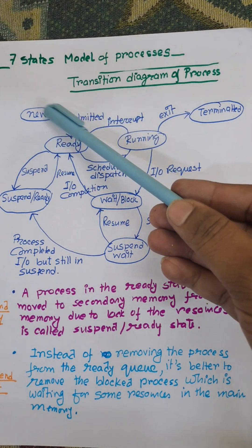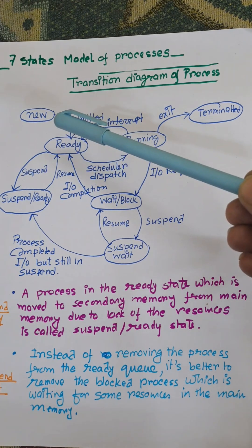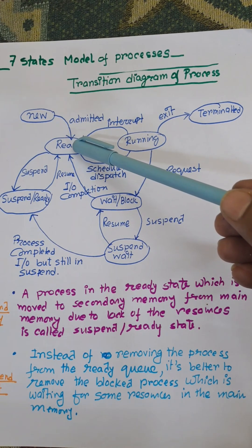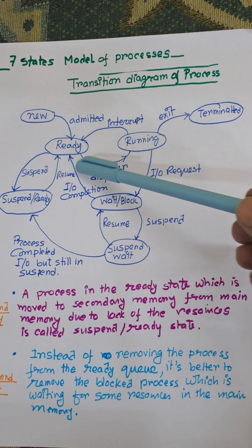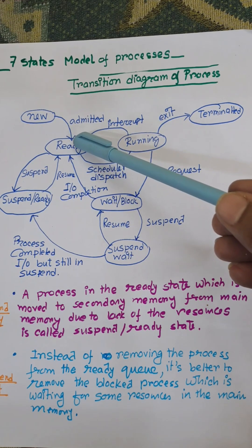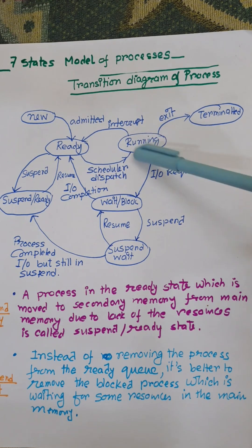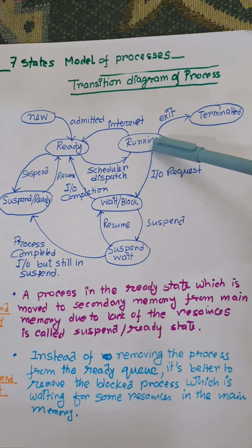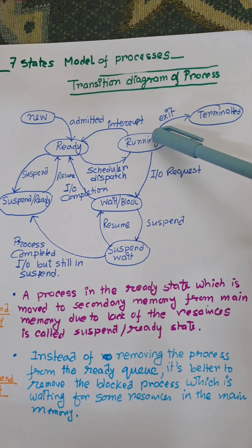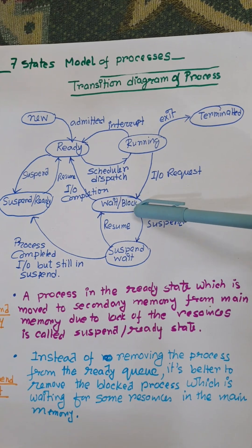New means when the process is just created, it goes to the ready queue. Then from the ready queue, there are different scheduling algorithms — the scheduler or dispatcher will take the process from the ready queue and move it to the running state. During the running state, it can either exit, that is terminated, or go to some IO request or event to occur.